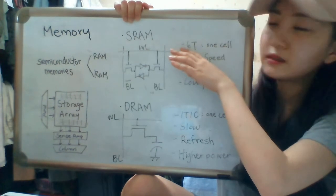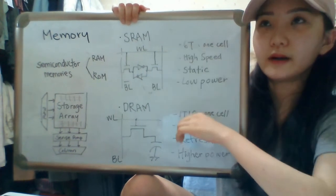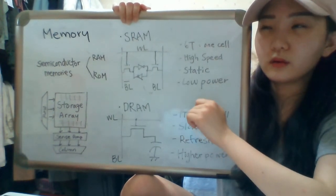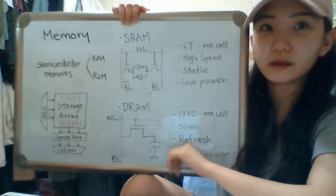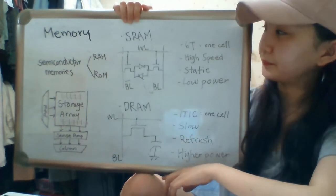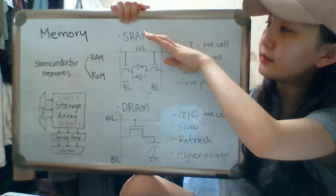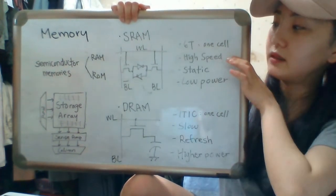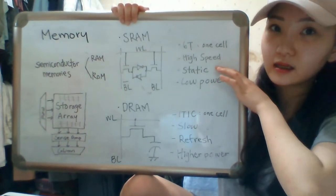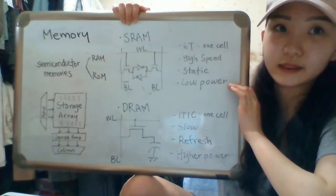The 6 transistors make the device bigger, so it has poor integration. The features of SRAM are high speed, static data, and low power dissipation.